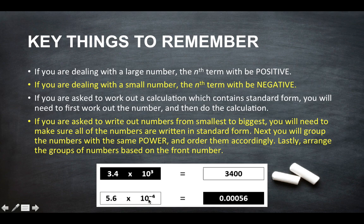5.6 times 10 to the power of minus 4. So the nth term is negative, so we're going to work backwards to make the number really small. So 1, 2, 3, 4.